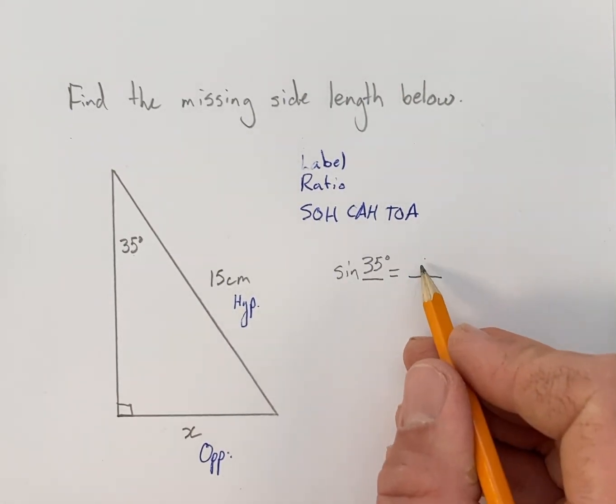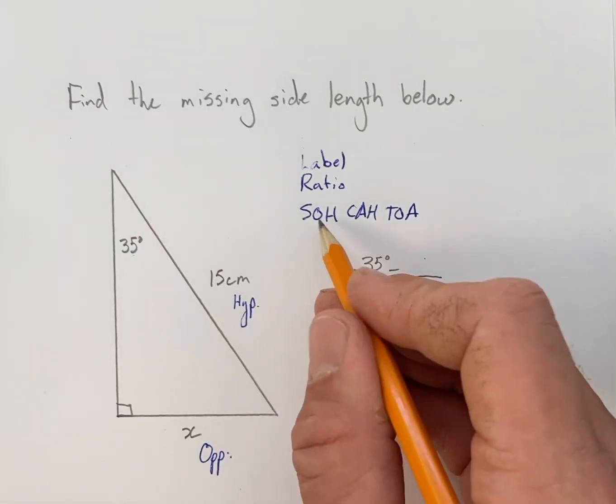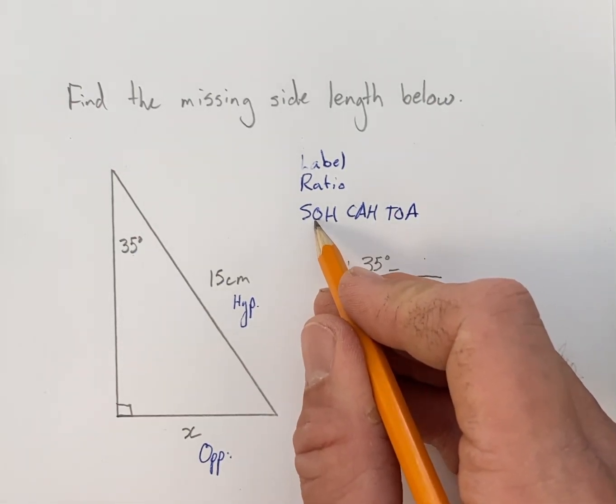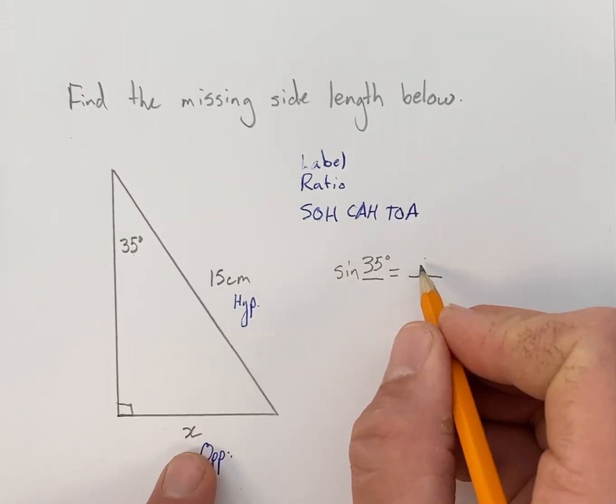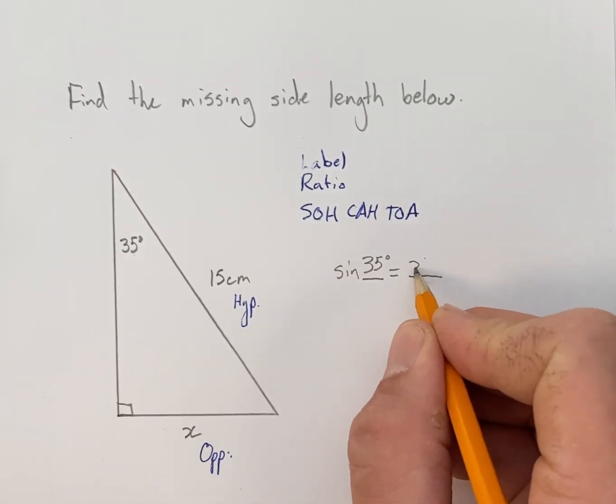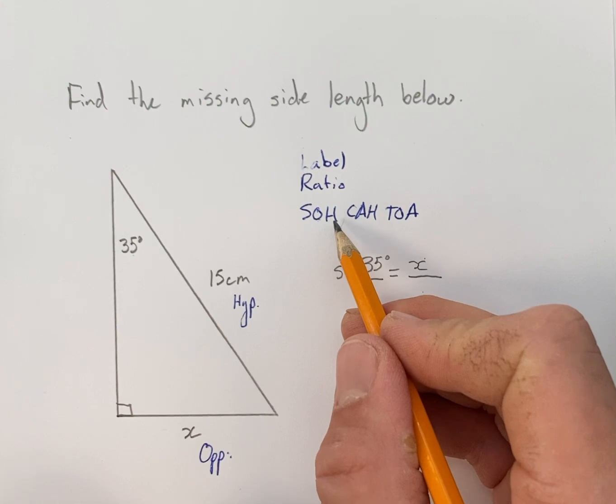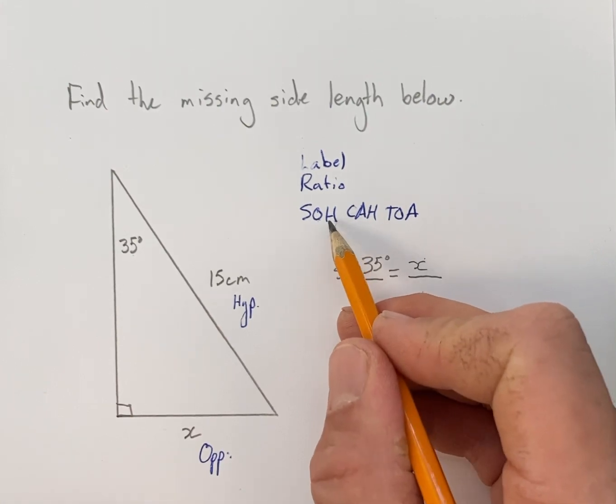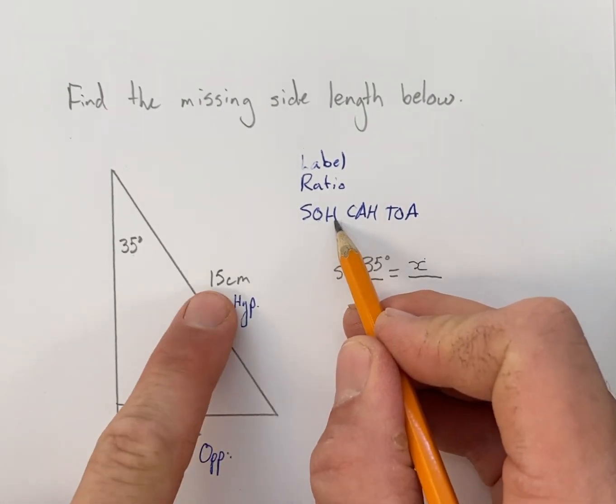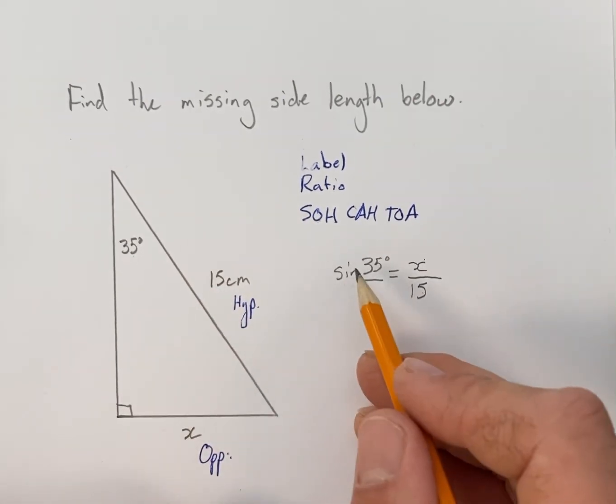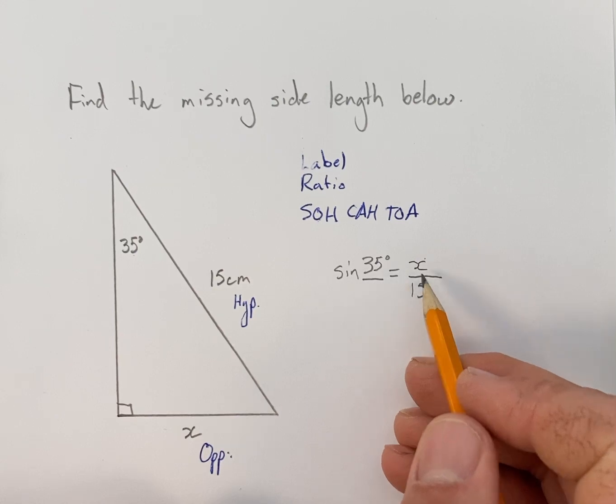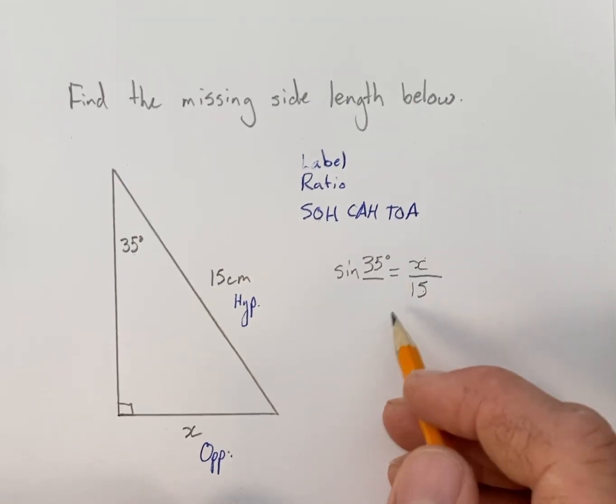And we'll fill in the other blanks. In the numerator goes the first side length that you see. So for sine it's the opposite, so in our case that's X. And in the denominator goes the second one that you see. So in sine it's the hypotenuse, and in our case that's 15.